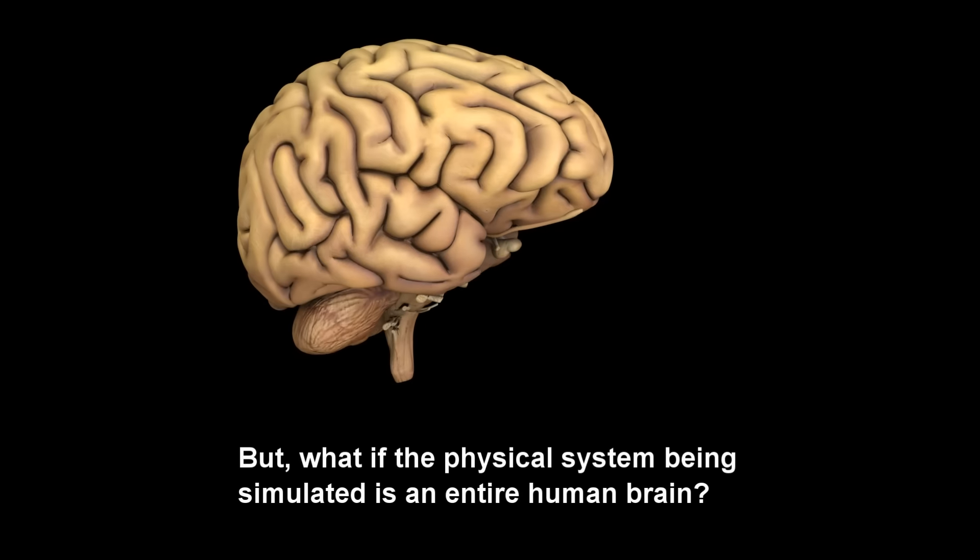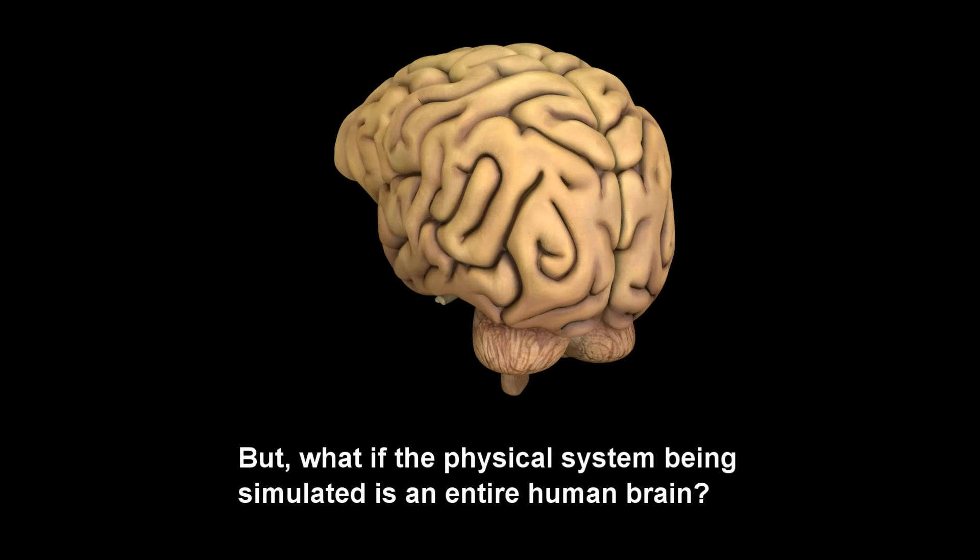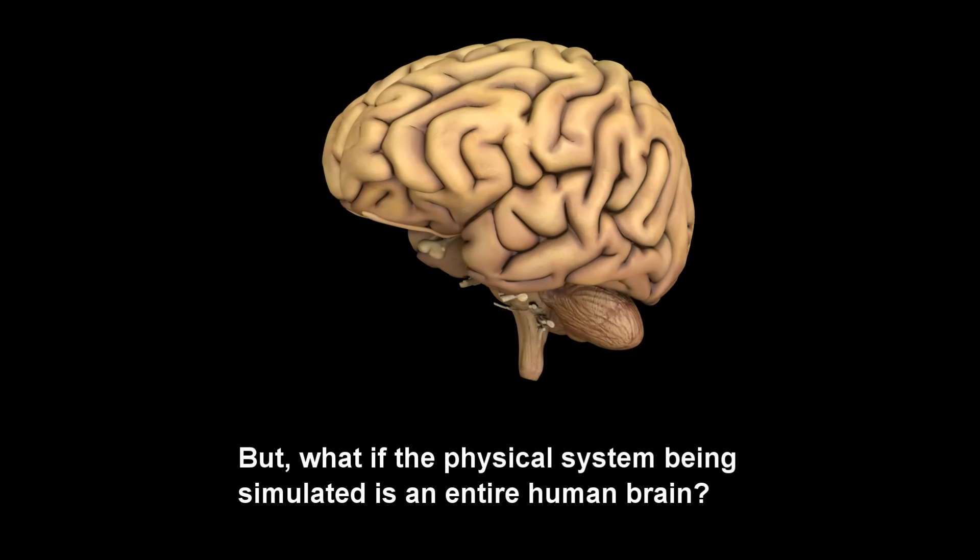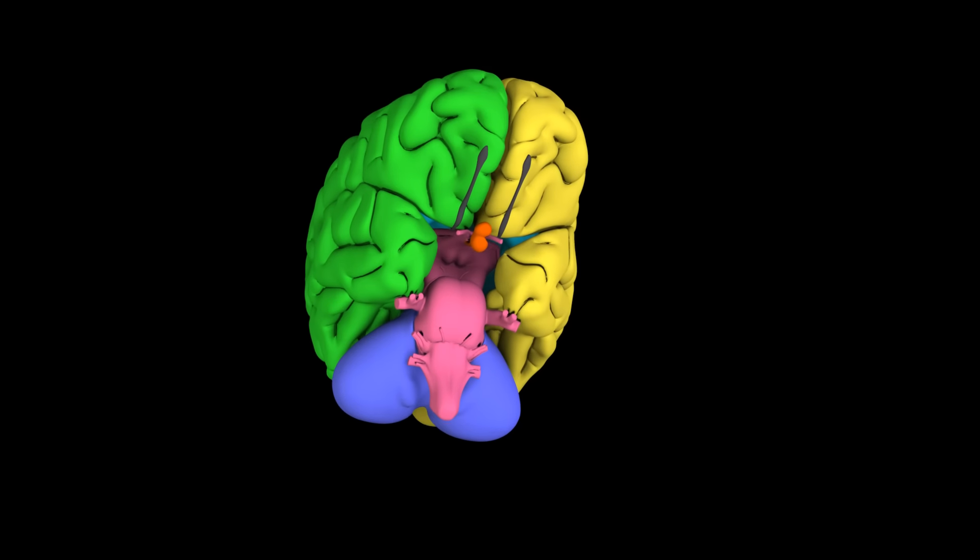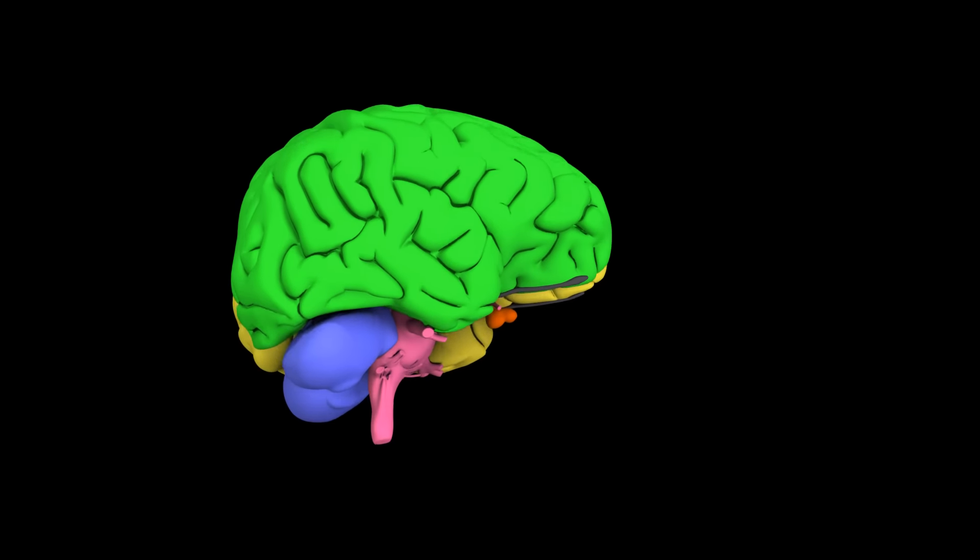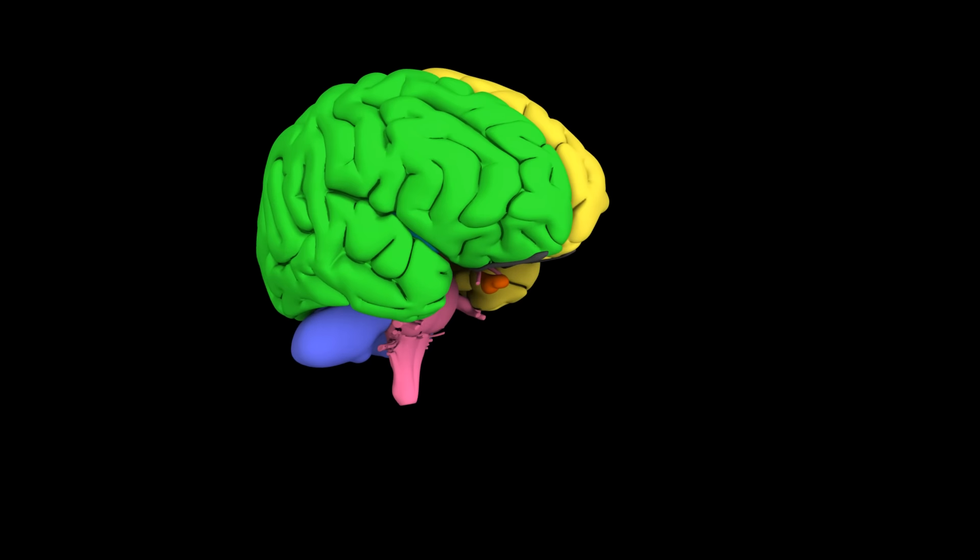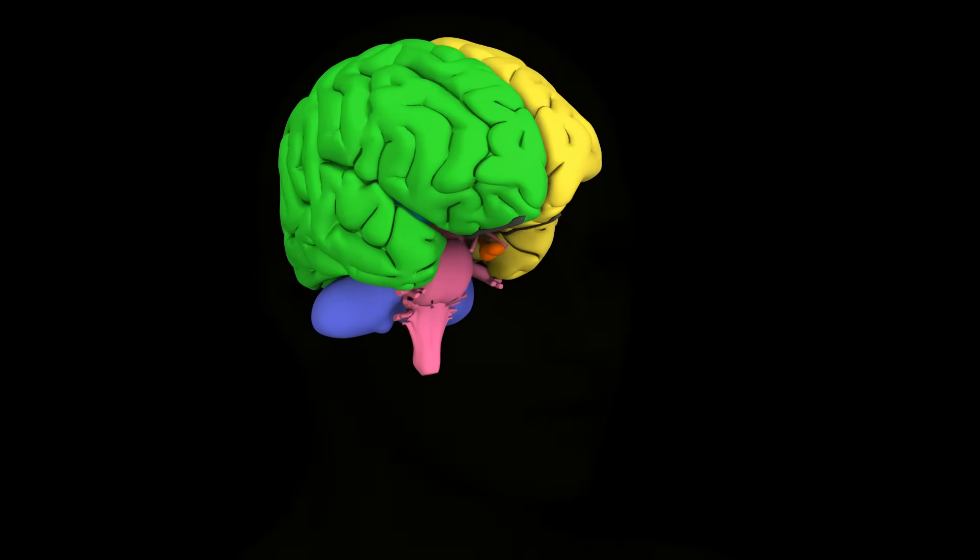But, what if the physical system being simulated is an entire human brain? If we believe that a brain is composed of atoms and molecules behaving according to the laws of physics, simulating a human brain should theoretically be no different than simulating any other physical system.